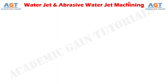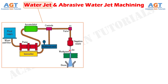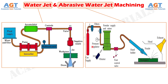Among the mechanical energy based non-traditional machining processes, water jet machining and abrasive water jet machining are two common processes that have a wide variety of applications, starting from metallic industry to textile and leather industries. In water jet machining, clean water is pumped to a high pressure with the help of an intensifier, and the pressurized water is delivered to the work surface in the form of a jet using a small diameter nozzle. On the other hand, a process where abrasive particles are mixed with the highly pressurized water before delivering onto the work surface is called abrasive water jet machining.